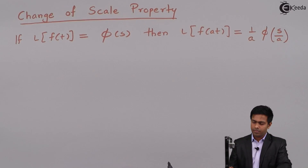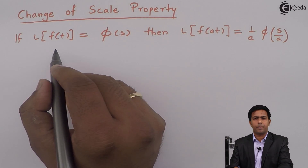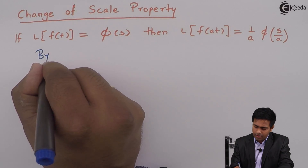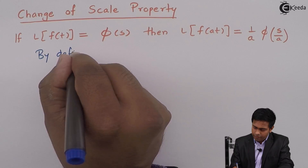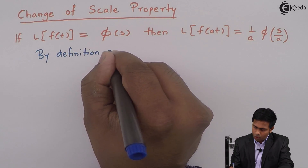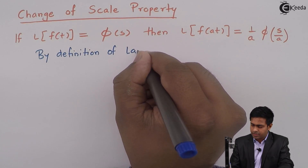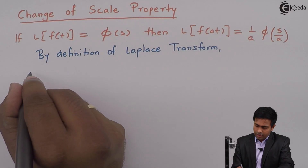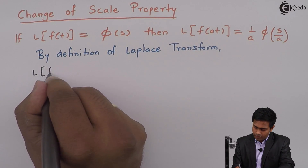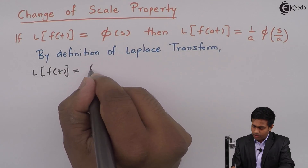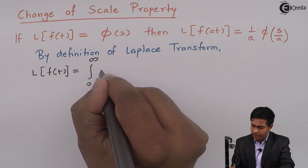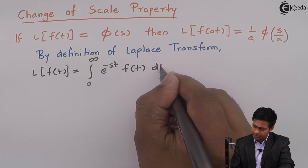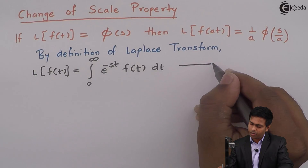To derive this property, we will start with the definition of Laplace transform. By definition, the Laplace of f(t) is equal to the integral from 0 to infinity of e raised to minus s·t times f(t) dt. I will call this equation number 1.